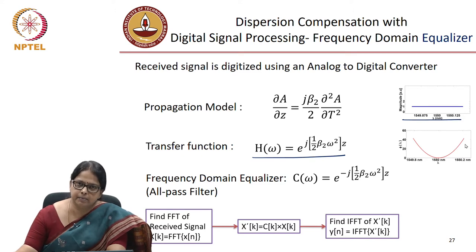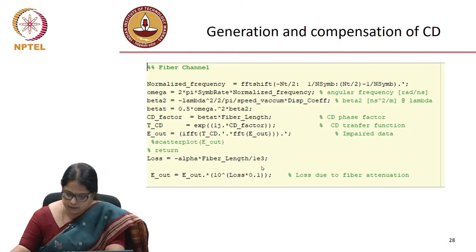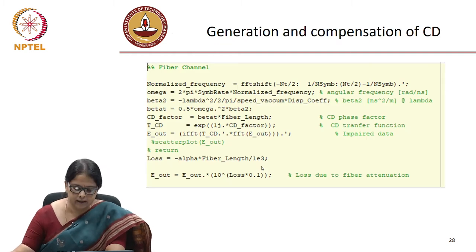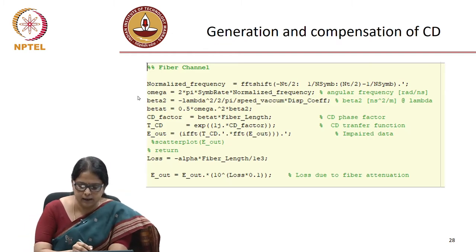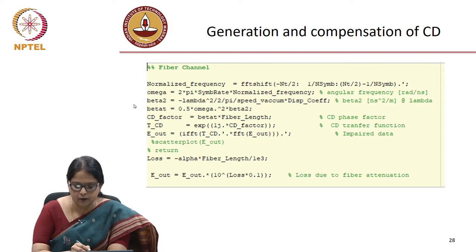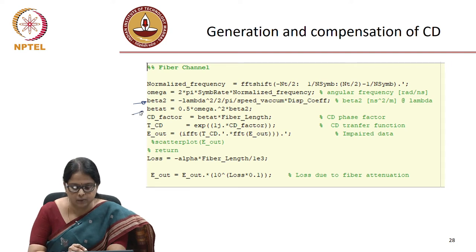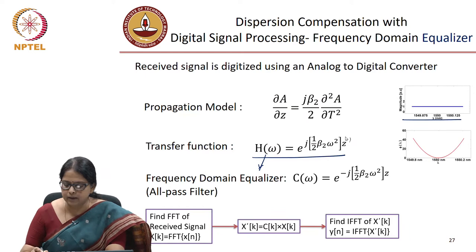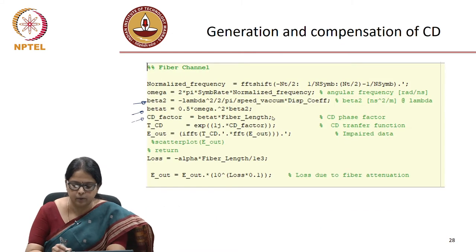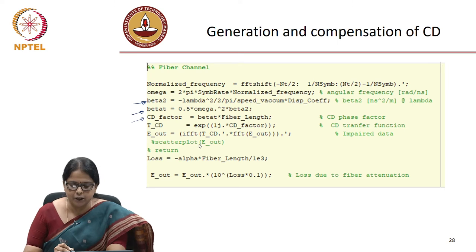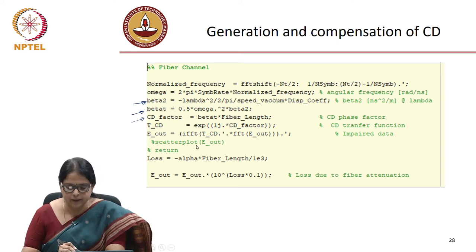The equalizer is simply multiplication by the inverse of H(omega) in the frequency domain. You calculate beta_2 from your D parameter, and from beta_2 you calculate half * omega^2 * beta_2, which is the exponent. The CD factor is actually half * beta_2 * omega^2 times the length of the fiber. So you model the chromatic dispersion in the frequency domain.